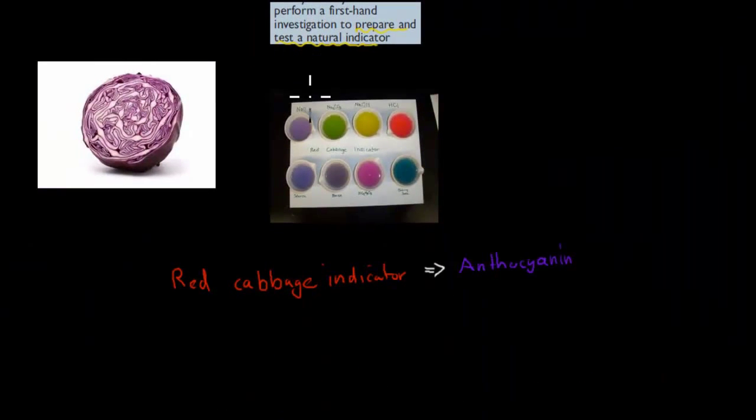What you would have actually done is grab some kind of vegetable. In many cases, you often grab, for example, a red cabbage. You would have made your natural indicator out of this red cabbage. These natural indicators are made from extracts of vegetables. This red cabbage has anthocyanin in it, and this is used as the indicator.